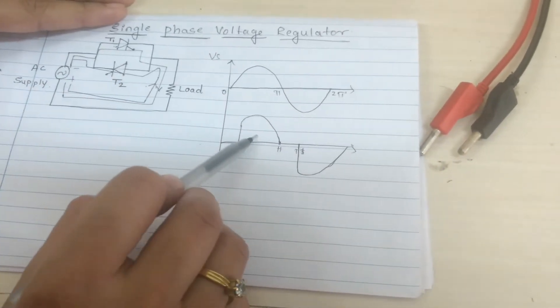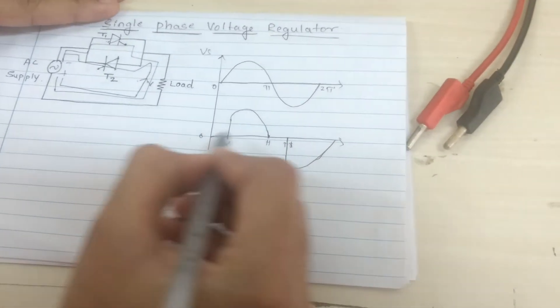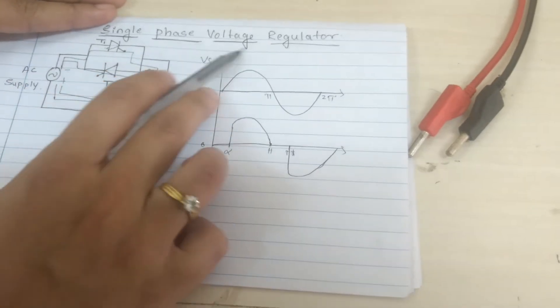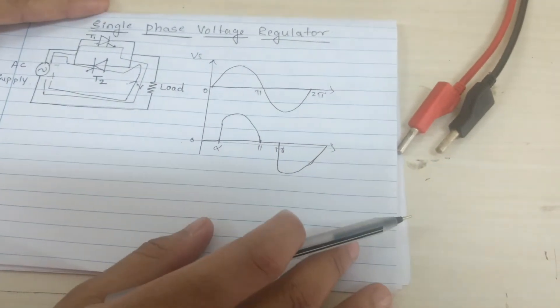That's why we are getting alternating current in the output waveform. So this is the output waveform of the single phase voltage regulator. Now we will perform the experiment on this.